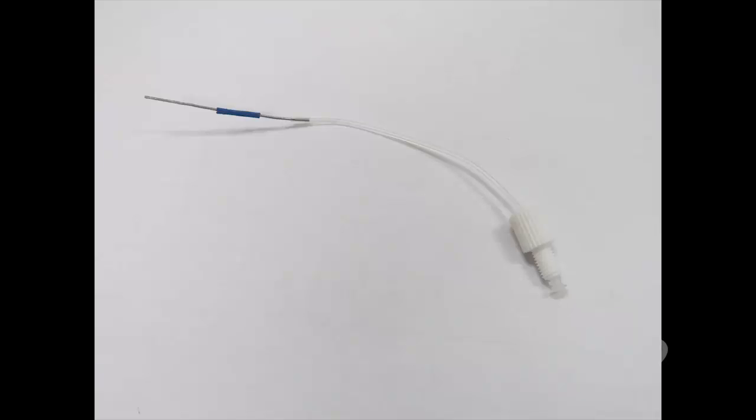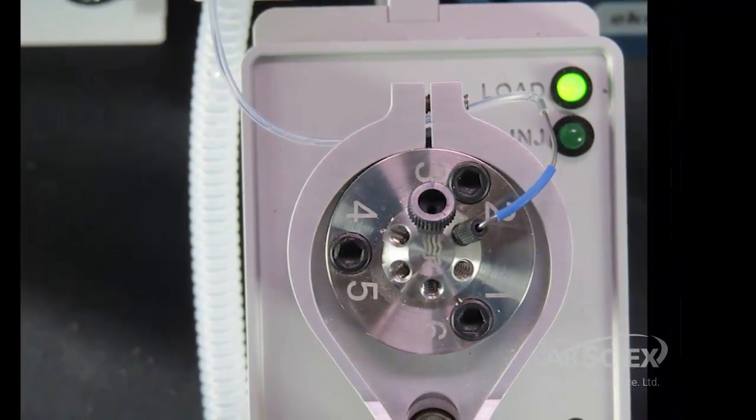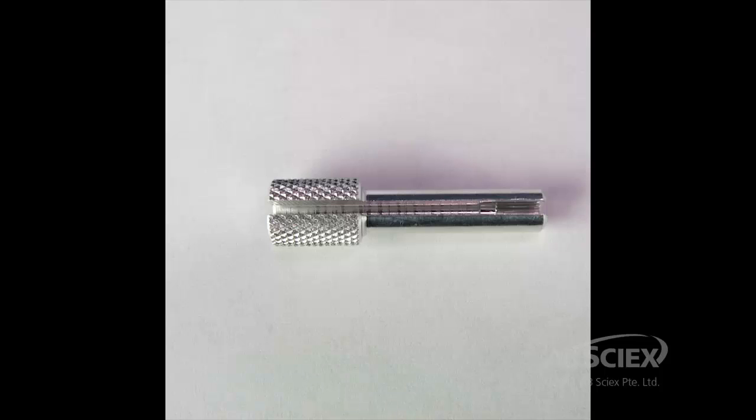Connect the injection waste tube assembly, part number 5017800, to port 2 with a black peak headless fitting, part number 200-00418, and tighten using the small tightening tool, part number 200-00404.